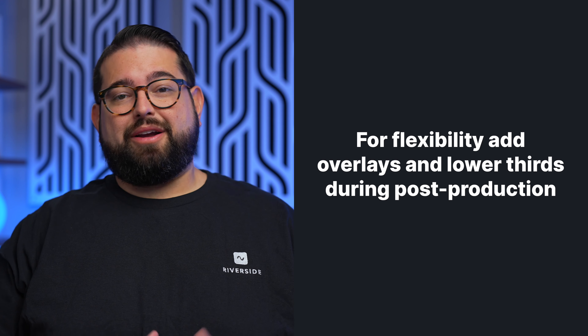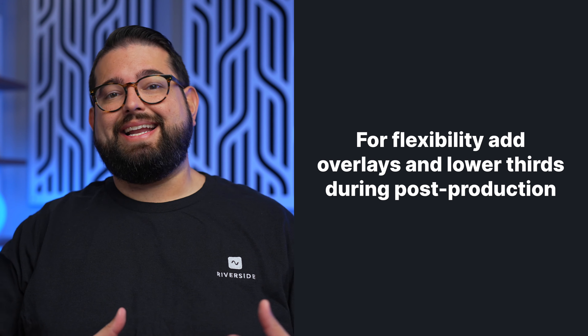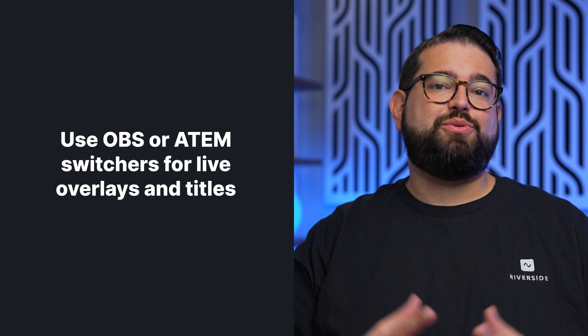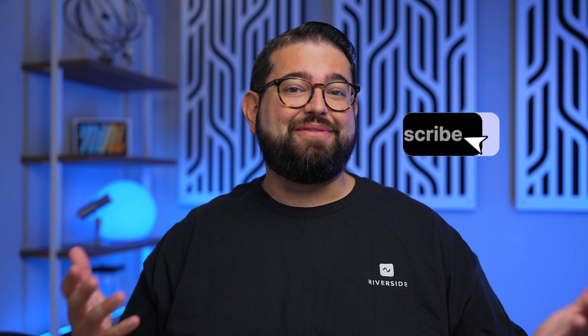For the most flexibility, we recommend adding your lower thirds and overlays in post-production in an editor like Premiere or Final Cut. But if you'd like to do those live — because you're live streaming and want lower thirds or even tickers — you can use OBS with the virtual camera feature, or use something like a Blackmagic ATEM Mini Pro. If you'd like to learn more about video production or video podcasts, subscribe to the Riverside channel. Thanks for tuning in — we'll catch you in the next video.